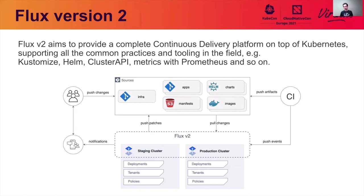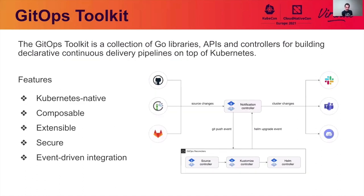Here is a diagram that shows you how Flux can now manage multiple clusters and look at different sources. The GitOps toolkit is a collection of Go libraries, APIs, and Kubernetes controllers. All these put together can help you build declarative continuous delivery pipelines. The toolkit is Kubernetes native — built with controller-runtime libraries and configured using Kubernetes custom resources. It's composable: you can pick and choose components based on what you want to do. You can extend it easily using libraries that help you build your own controllers and integrate those controllers back into the toolkit.